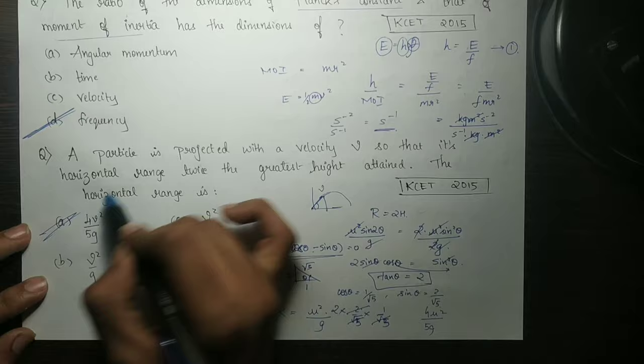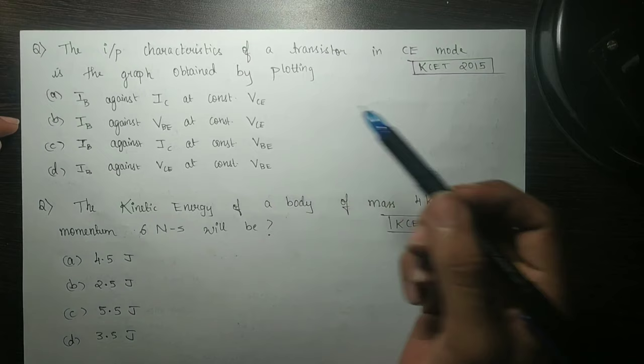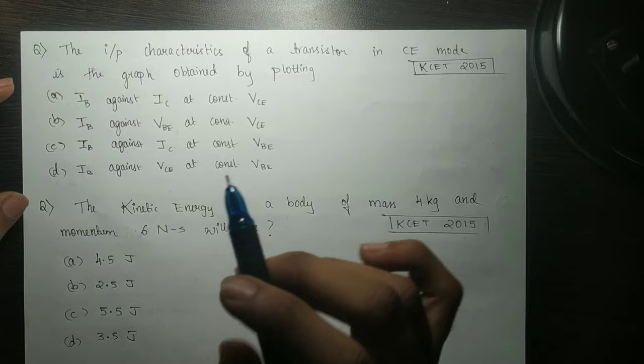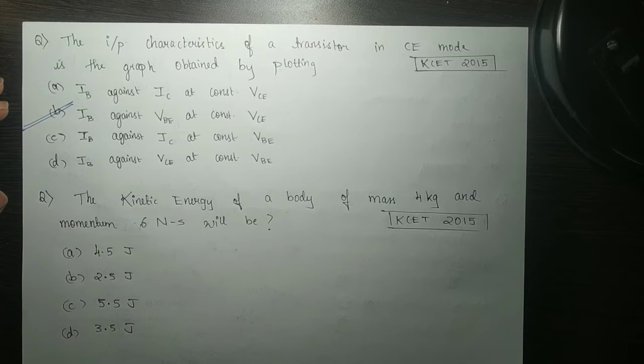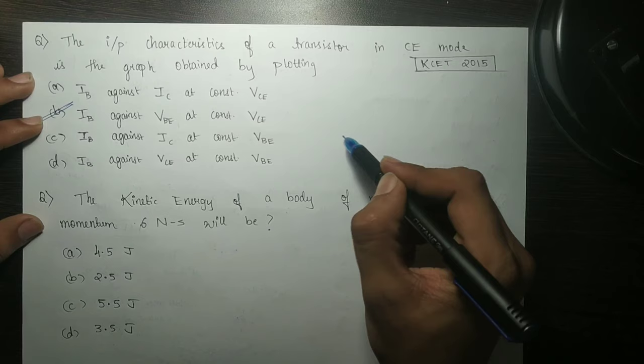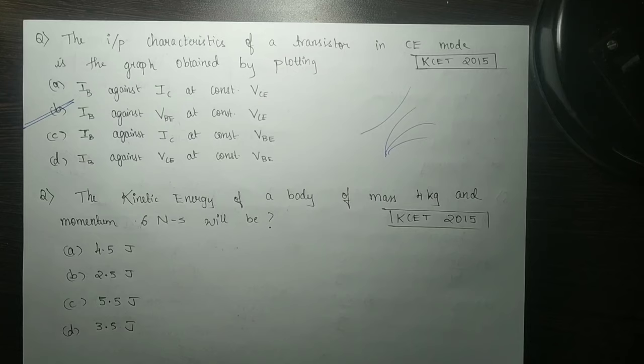Next question. The input characteristics of a transistor in common emitter mode is the graph obtained by. Factual question. We give this fact: the input characteristics with IB and VB, and the output characteristics with IC and VCE are the output characteristics in common emitter in terms of transfer characteristics.